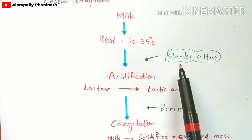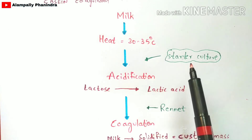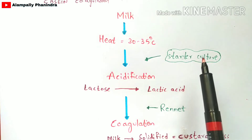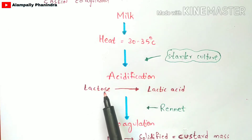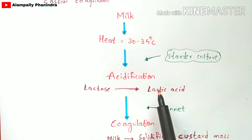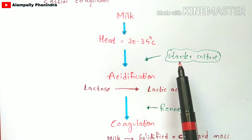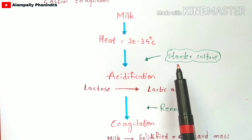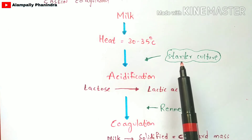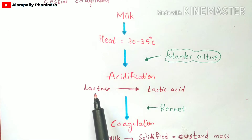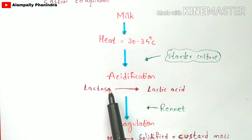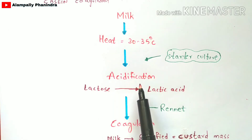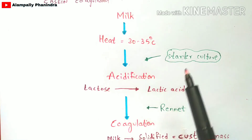Acidification is a process where you add the starter culture. Starter culture is a type of liquid culture which plays a major and vital role in converting lactose into lactic acid. Lactose is the sugar present in milk, and that lactose gets converted into lactic acid by the starter culture. This process is called acidification, and the starter culture plays a major and vital role here.